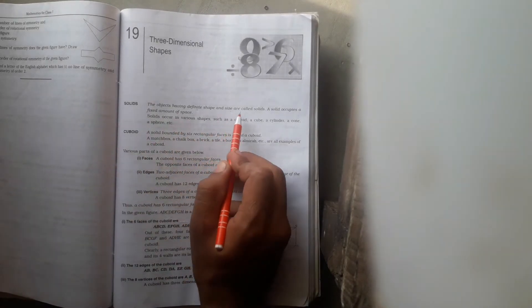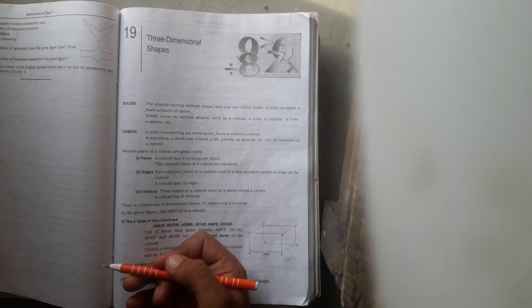Student, what is a solid? The objects having definite shape and size are called solids. Just like examples: cuboid, cube, cylinder, cone and sphere. These are examples of solids.